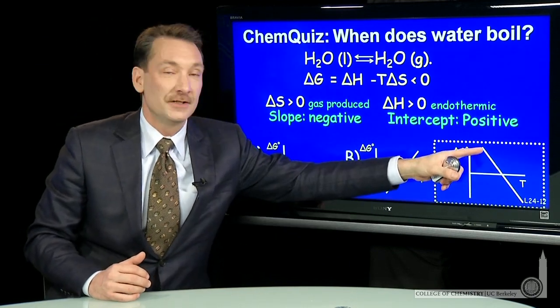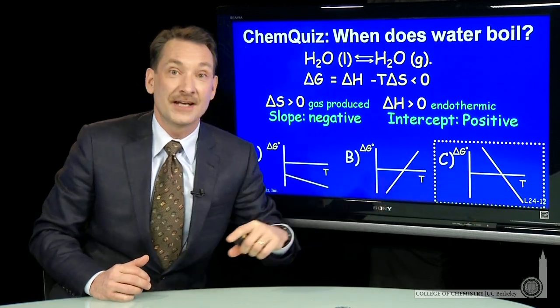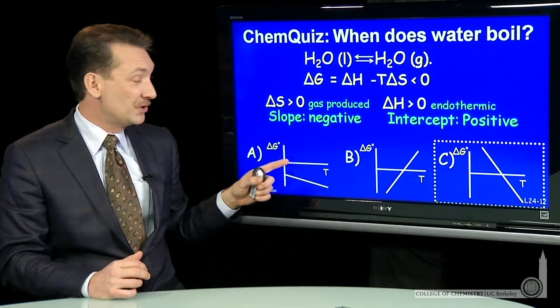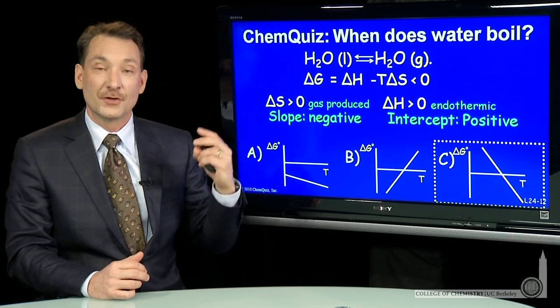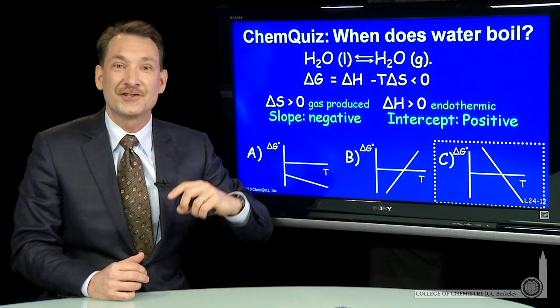And that's what you have here. Low temperatures, positive delta G. High temperatures, negative delta G. And that's the only situation where that's true. So two ways to arrive at answer C.